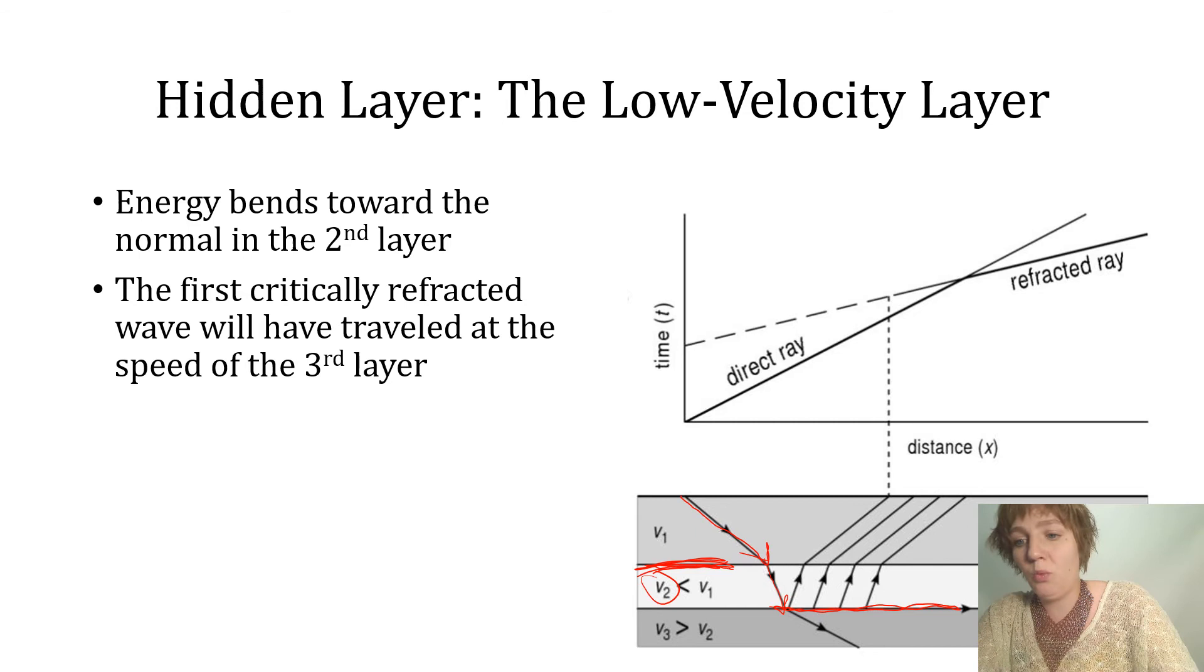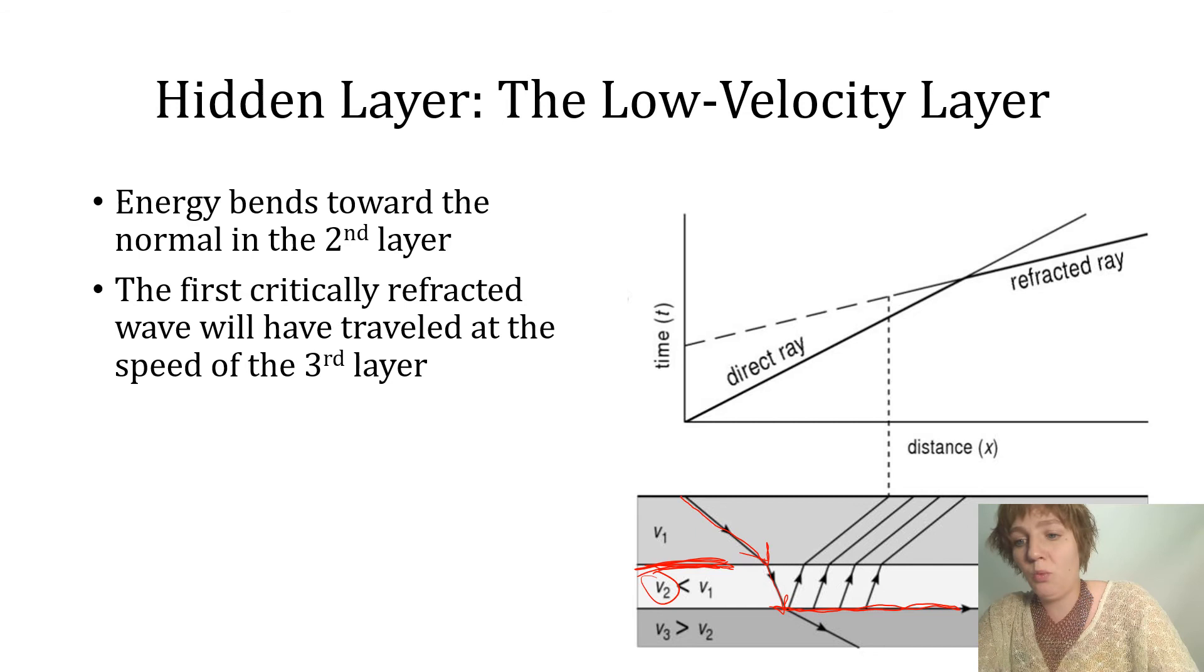One over the slope of this line is actually going to give you the velocity of the third layer, and you can't tell that there even is a second layer.